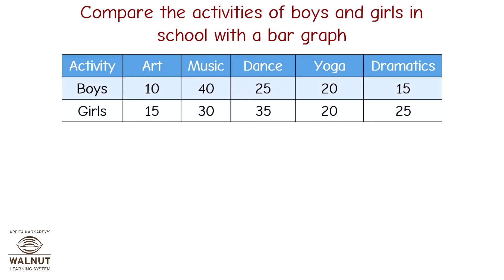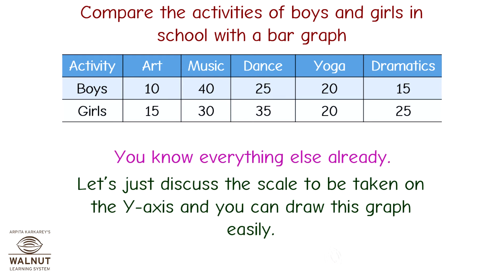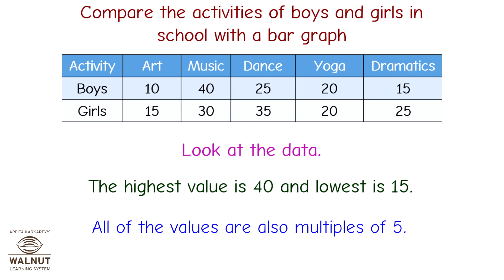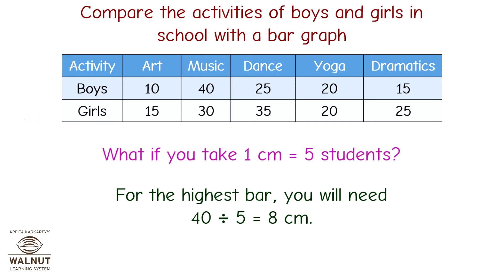Next example: compare the activities of boys and girls in school with a bar graph. Let's just discuss the scale for the y-axis. The highest value is 40 and the lowest is 15, and all values are multiples of 5. If we take 1 centimeter equal to 5 students, the highest bar needs 40 divided by 5, equal to 8 centimeters — that seems okay. So take that scale and draw the joint bar graph.